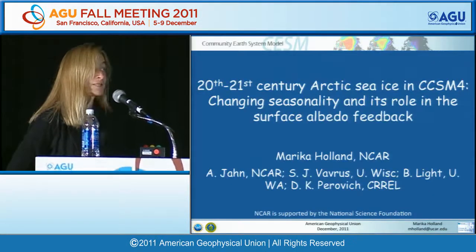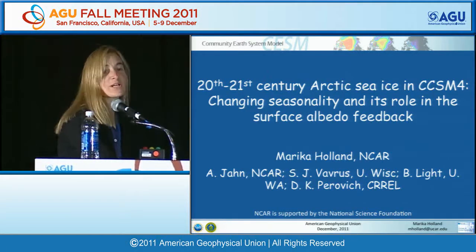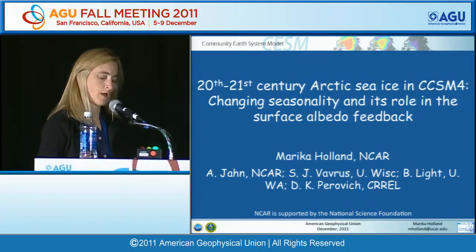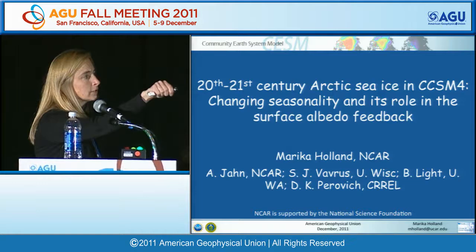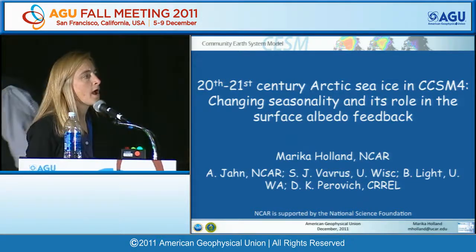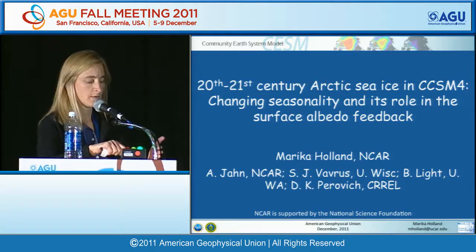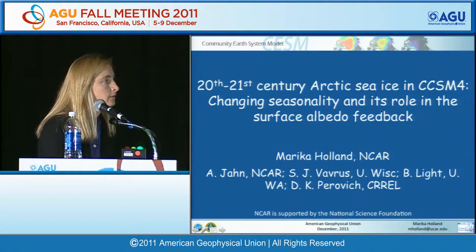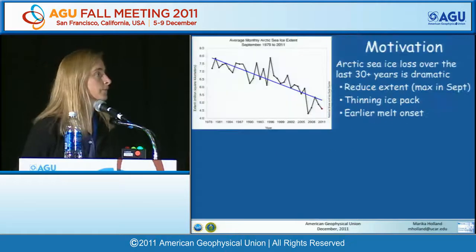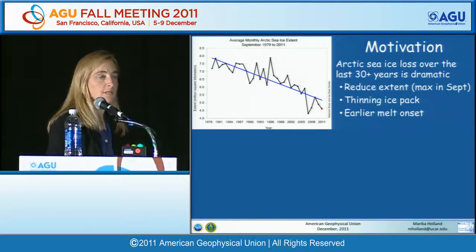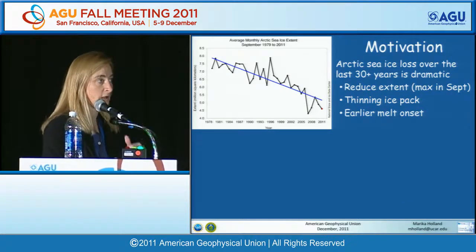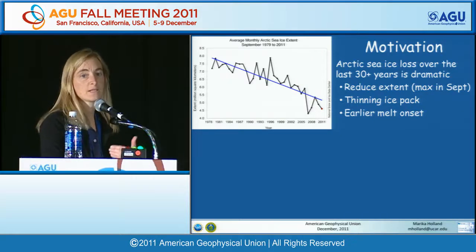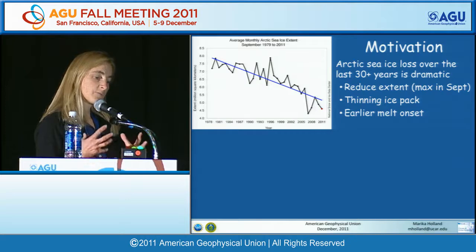I'm Marika Holland and I'm going to be talking about climate model simulations of 20th and 21st century Arctic sea ice in the CCSM4 model, and the role of changing seasonality in sea ice and how that influences the surface albedo feedback. The motivation is the dramatic changes happening in the Arctic sea ice system. This shows the time series of September ice extent over the satellite record through 2011, and we're seeing very large reductions in sea ice cover, a thinning of the ice pack, and earlier melt onset dates.